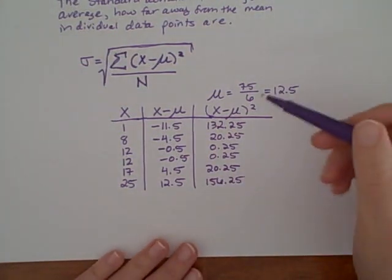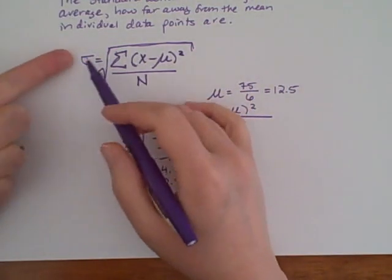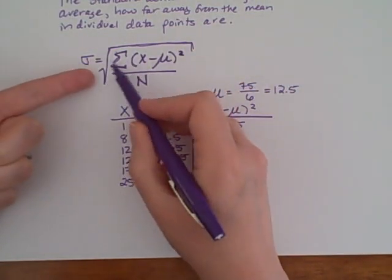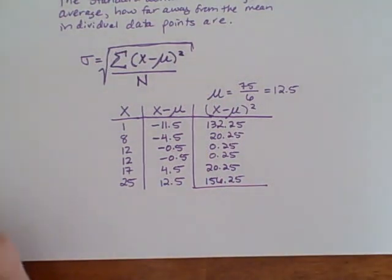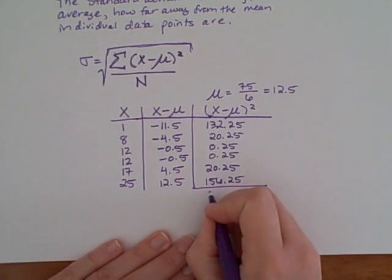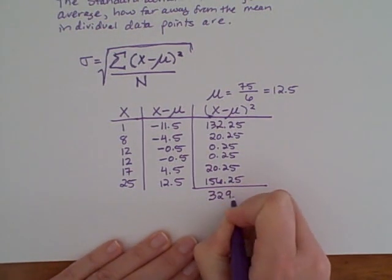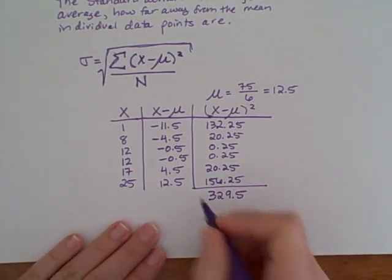Okay, so there are all of our squares, and then when we look at the formula, we need to take all of those squares and add them all up. So I'm just going to total them down here: 132.25 plus 20.25 plus 0.25 plus another 0.25 plus 20.25 plus 156.25, and we get an overall value of 329.5, so that's the sum.